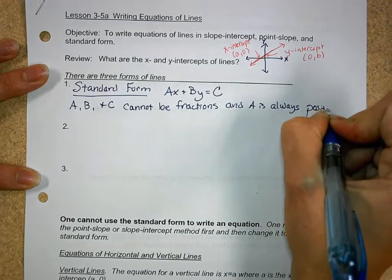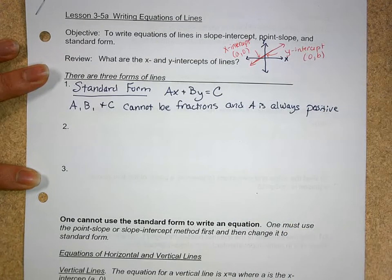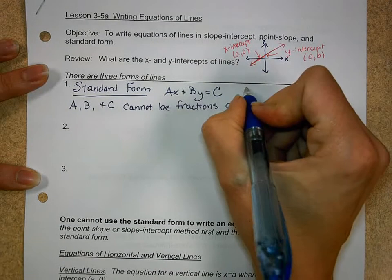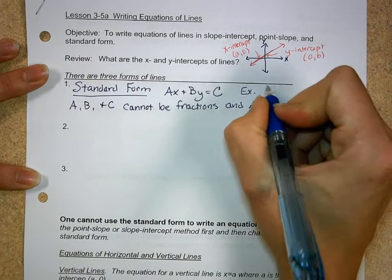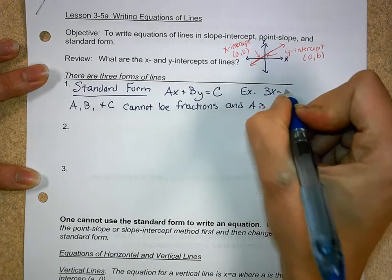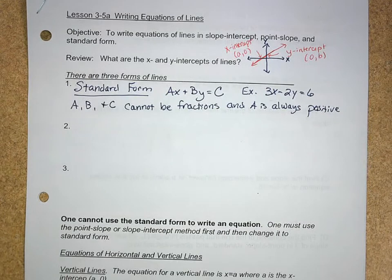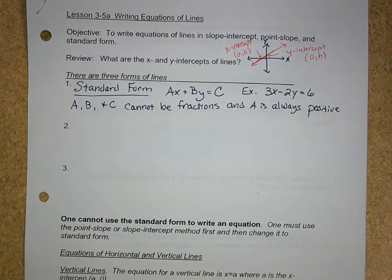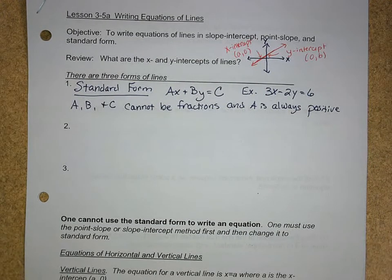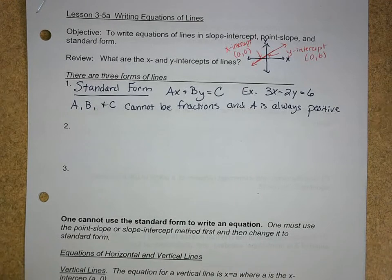And A is always positive. And the reason why A always has to be positive is just so that we're always writing it in the same way. Here's an example of this. Something as simple as 3x - 2y = 6. Now, these are all equations of lines. And notice, in order to have linear equations, you have to have two variables.